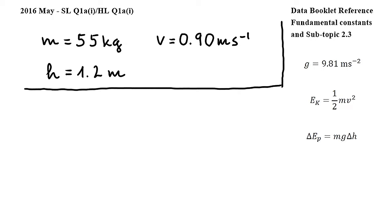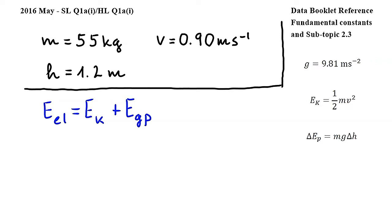This means that the elastic energy that was stored in the spring has been converted into kinetic and gravitational potential energy. Based on this, we can write that EEL, so elastic energy, is equal to EK, so kinetic energy, plus EGP, gravitational potential energy.